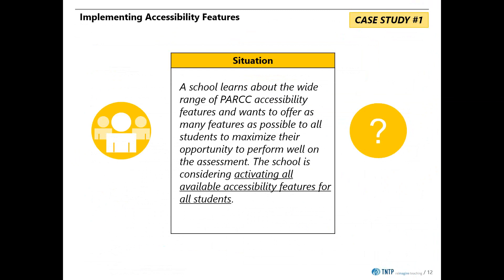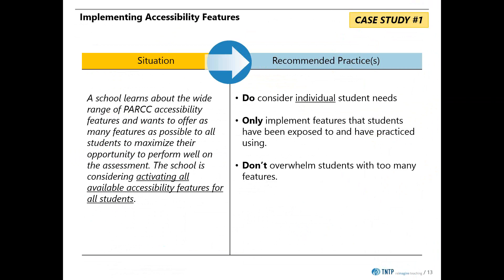In this first case, here is a school that truly has its students' best interests at heart, but may not have considered the potential implications of their decisions around accessibility features. This school is considering activating all available accessibility features for all students. Though the school means well, it should take great care when selecting accessibility features and not just check all when it comes time to select which ones to implement.